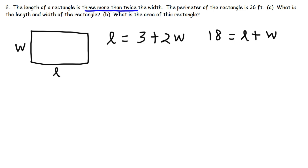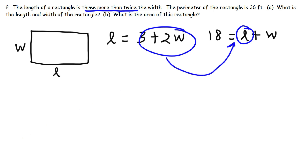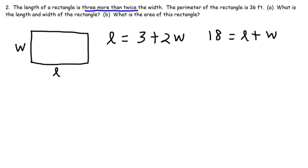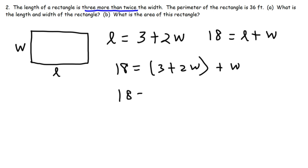At this point we have two equations and two variables, so we can solve this system by substitution just like before. We replace L with 3 plus 2W in the second equation: 18 equals 3 plus 2W plus W. Combining 2W and W gives us 3W, so we have 18 equals 3 plus 3W.